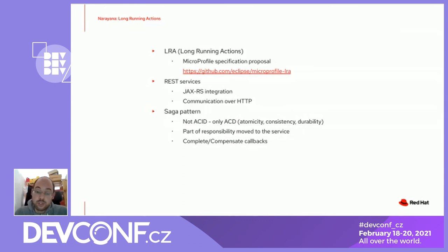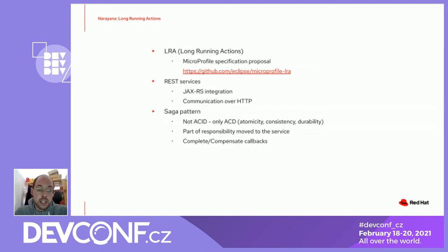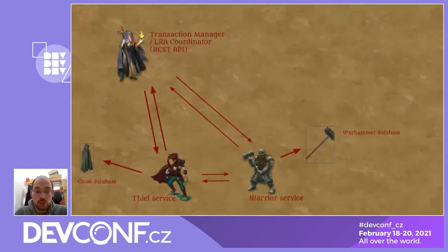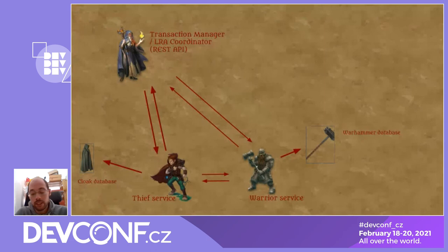With LRA, the transaction manager does not directly manage data sources. Instead, the service creates callbacks for complete or compensate, which are guaranteed to be called at the end of the transaction. The transaction manager decides when the action is successful or not and calls back to the services.